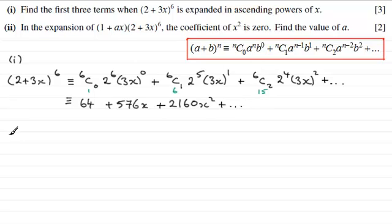In part 2, we've got to now find the value of a when the coefficient of x squared is equal to 0. So at this point you might like to in fact just pause the video and have a go at this.